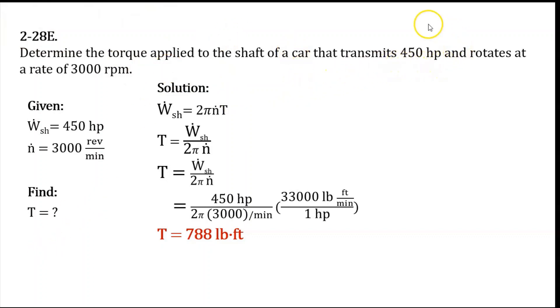We have 450 horsepower as our W dot, which is the power transmitted through the shaft. And we have 3000 revolutions per minute as our n dot, or the number of revolutions per unit time.